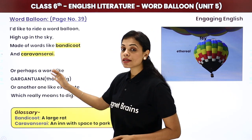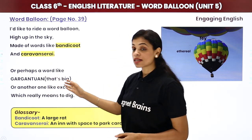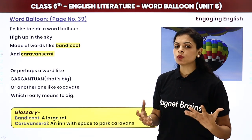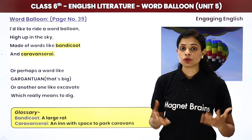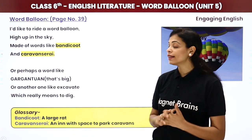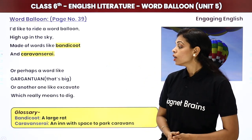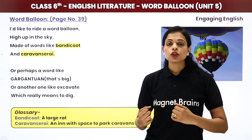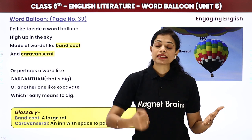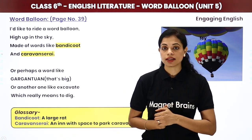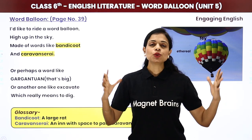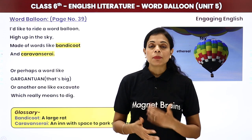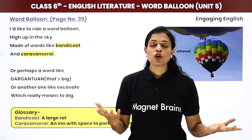'Or perhaps a word like gargantuan — that's big. Or another one like excavate, which really means to dig.' She is using very different words that you have probably never heard before, like bandicoot, caravan sarai, or gargantuan. Gargantuan means very big. Excavate means to dig — like when you do research or make a discovery, digging something out is called excavation. She is clearly very interested in vocabulary building.